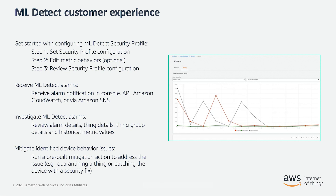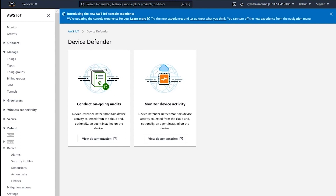In order to follow along with me in the demo today, you will need an AWS account. You will need some devices connected and sending messages to AWS IoT Core. If you want to receive notifications, you will need an SNS topic and role. So let's go ahead and set up AWS IoT Device Defender ML Detect.